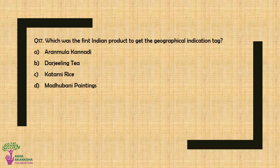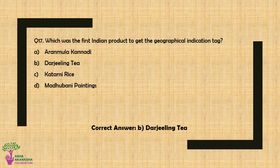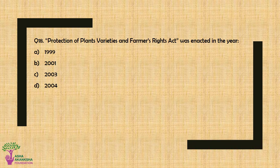Question No. 17: Which was the first Indian product to get the geographical indication tag? The correct answer is Option B — Darjeeling tea.